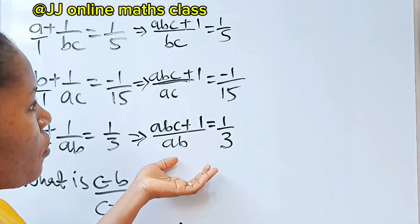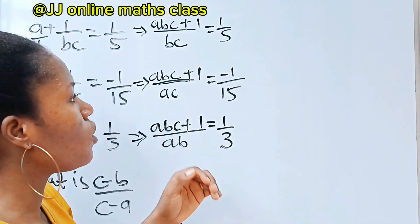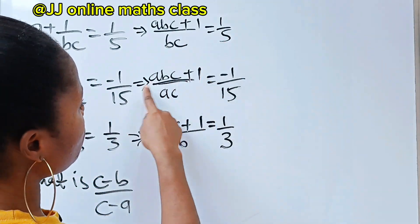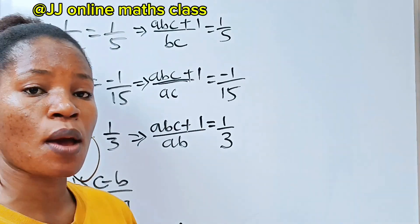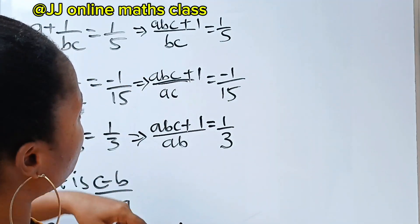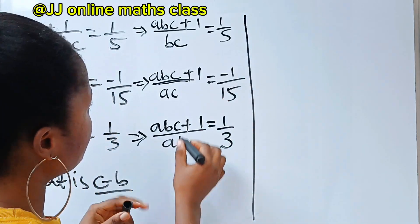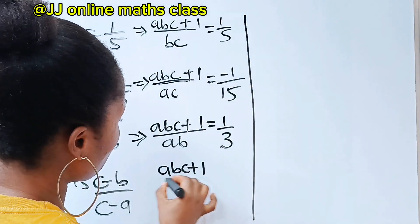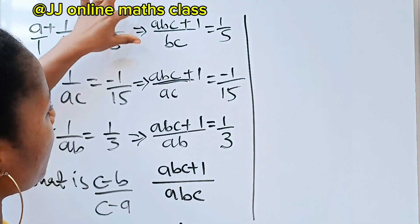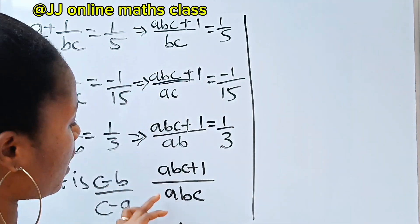Now I want us to pay attention. When you look at these three equations we just solved, notice that they have the same thing in common — the numerator is abc plus 1. Each of them, the numerator is abc plus 1. And if you look at the denominator, if we say the denominator is abc plus 1 over abc, then this can divide this, this can divide this, and this can divide this.